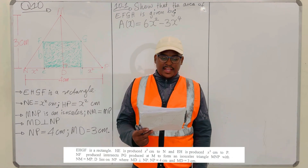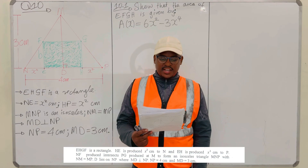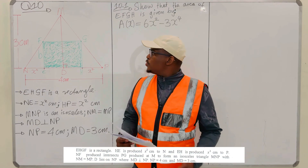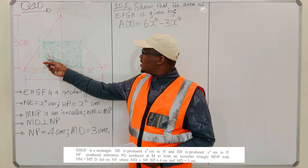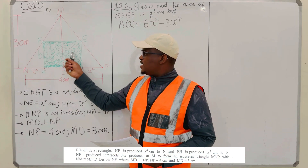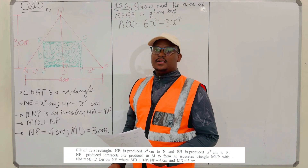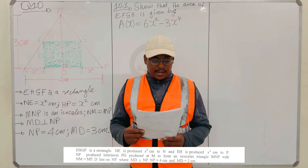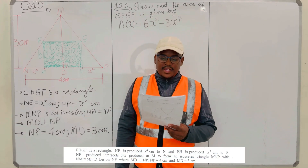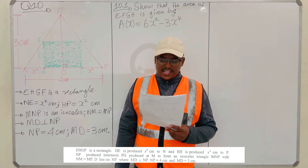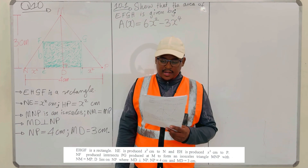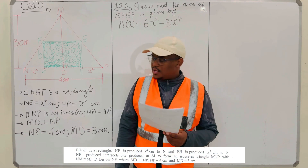They are saying EHGF is a rectangle — so you are told that EFGH is a rectangle. This shaded or dotted part here is a rectangle. They went on to say HE is produced X squared centimetres to N, and EH is produced X squared centimetres to P.